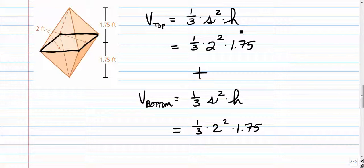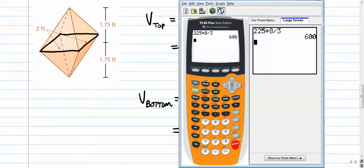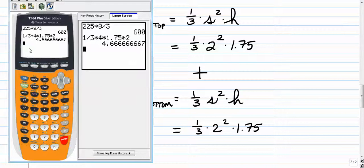So you can add these two together, or you can just take one of them and multiply it by two. It doesn't really matter. Let's go to our calculator. Let's see. One-third times four times 1.75 times two. You get 4.6 repeating.